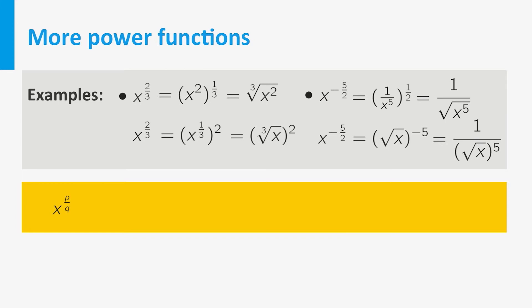In this way, we have defined x to the power p over q with p and q positive integers, as the q-th root of x to the power p, or the q-th root of x to the power p. And x to the power minus p over q, as 1 over the q-th root of x to the power p, or as 1 over the q-th root of x to the power p.